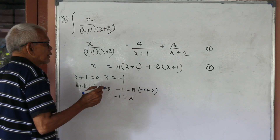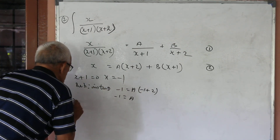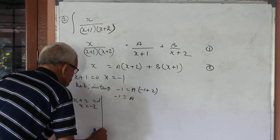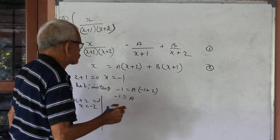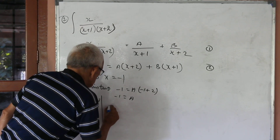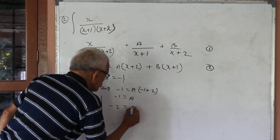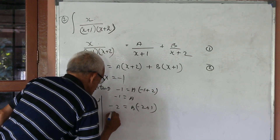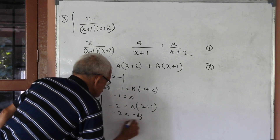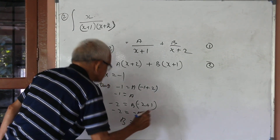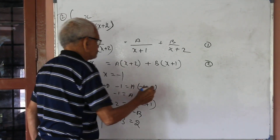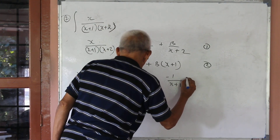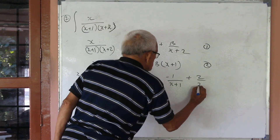To get B, put x plus 2 equal to 0, so x equal to minus 2. Substitute that value: minus 2 equal to B into (minus 2 plus 1), so minus 2 equal to minus B, therefore B equal to 2.